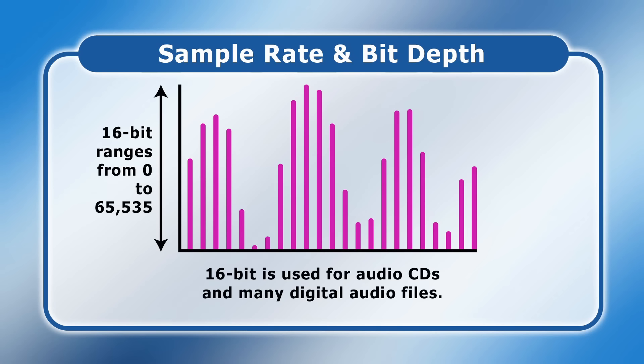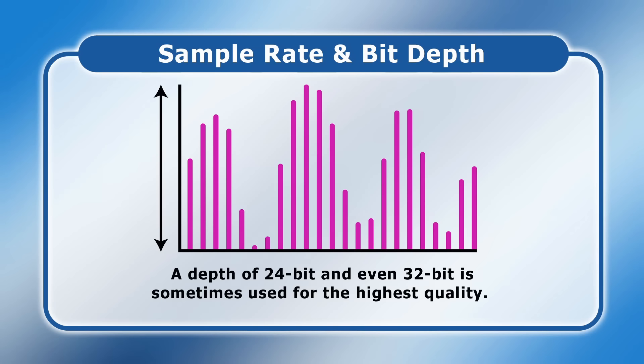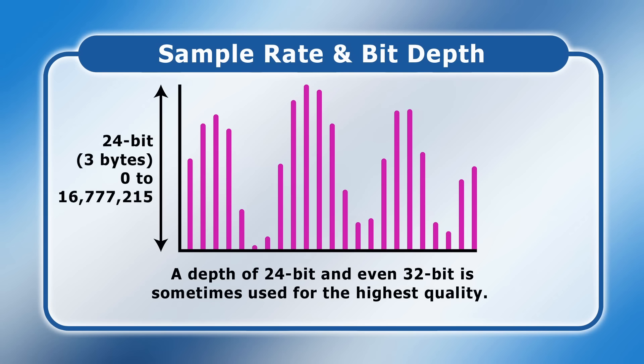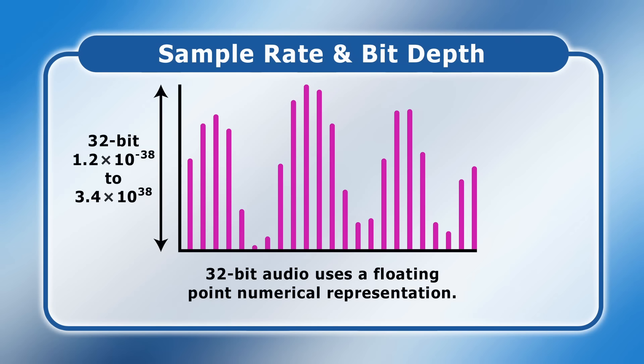Stepping up, 16-bit audio provides a value range from 0 to 65,535, which provides much higher quality and is the bit depth used for audio CDs and many digital audio files. However, a bit depth of 24 and even 32 is sometimes used for the highest quality. 24-bit audio allocates 3 bytes to each sample to provide a sample range of 16,777,216 digital values. Meanwhile, 32-bit audio uses a floating point numerical representation that provides an excess of 10 to the power 38 amplitude levels.